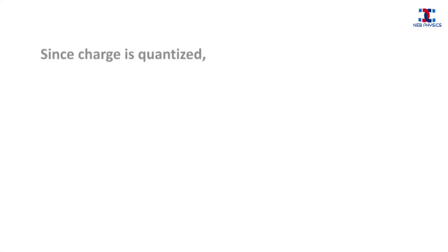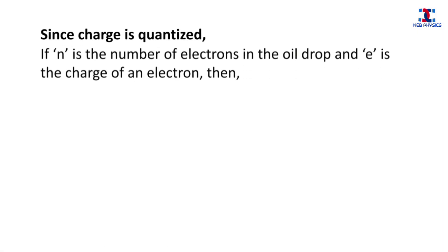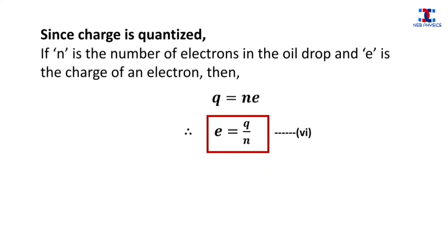We know that charge is always quantized, meaning charge always occurs as an integer multiple of the charge of an electron. So if n is the number of electrons in the oil drop and e is the charge of an electron, then q equals n times e. Finally, we get the charge of an electron e as q divided by n.